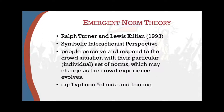Sociology offers a few explanations for why people congregate together towards a cause, an advocacy, or a common goal. Under the symbolic interactionist perspective, Ralph Turner and Louis Killian explain in their emergent norm theory that people perceive and respond to crowd situations with their own individual set of norms, which may change as the crowd experience evolves. Traditional norms can be overthrown when people are put into situations that demand institutional practices be overturned because of a crisis or a problem.